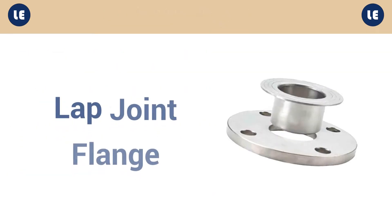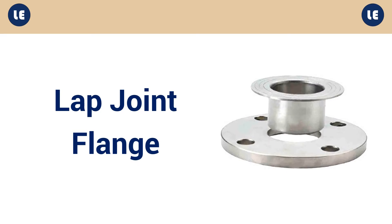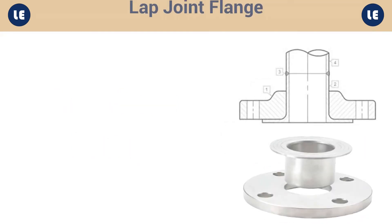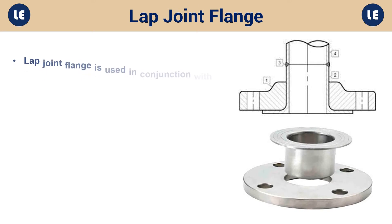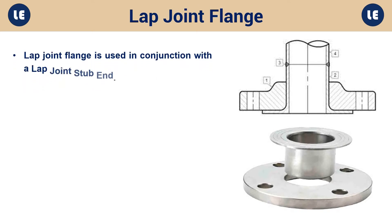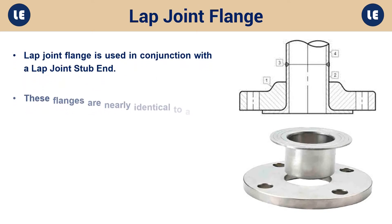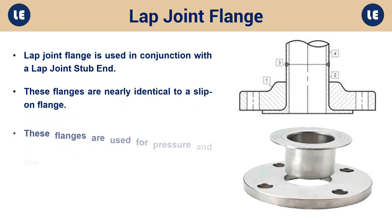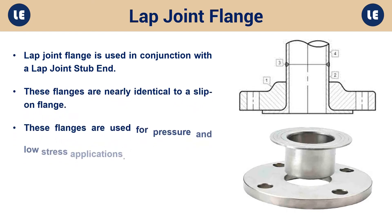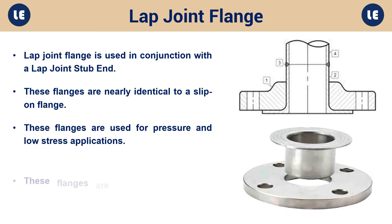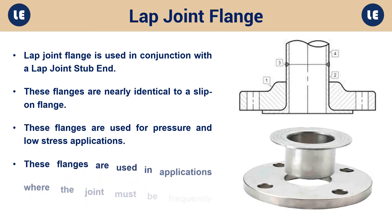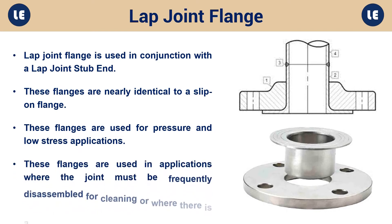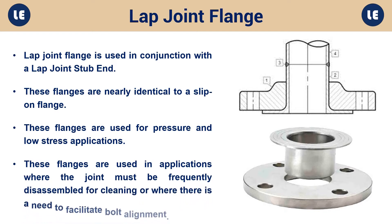Lap-joint flange: A lap-joint flange is used in conjunction with a lap-joint stub end. These flanges are nearly identical to a slip-on flange and are used for pressure and low-stress applications. They are also used in applications where the joint must be frequently disassembled for cleaning, or where there is a need to facilitate bolt alignment.